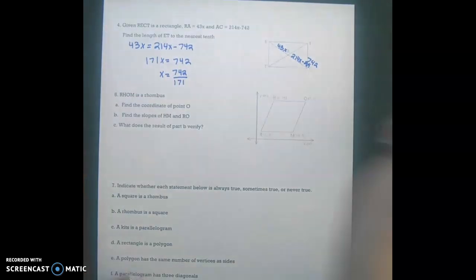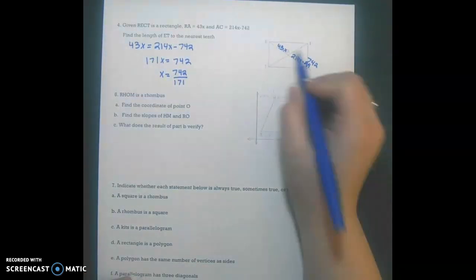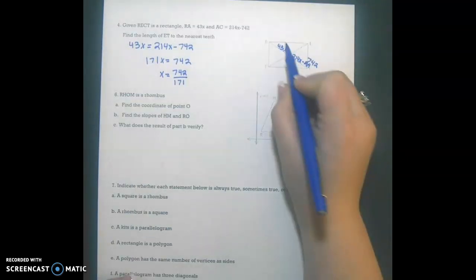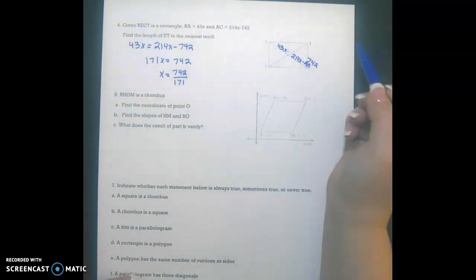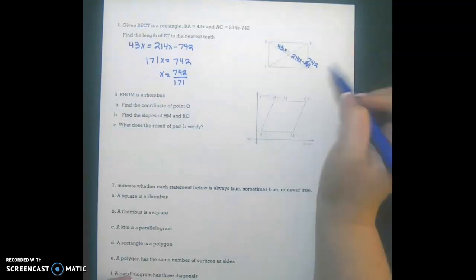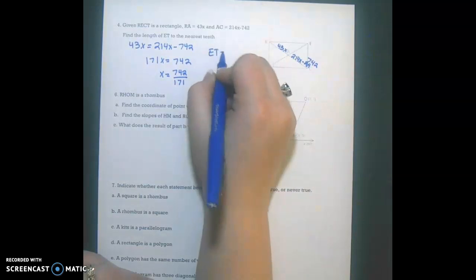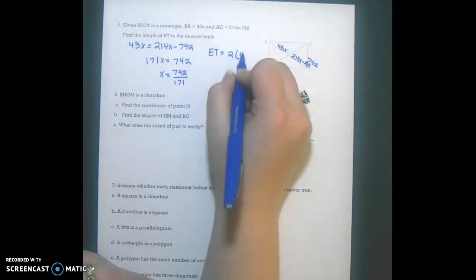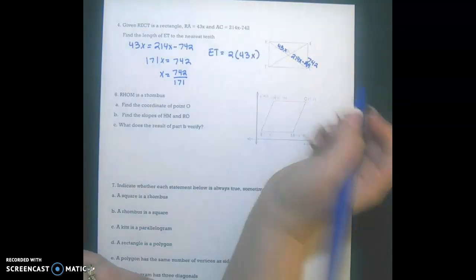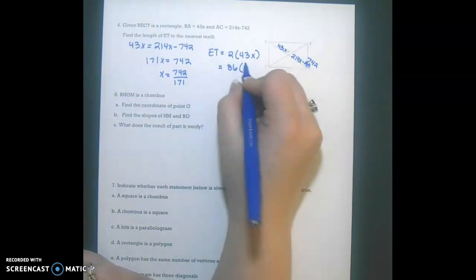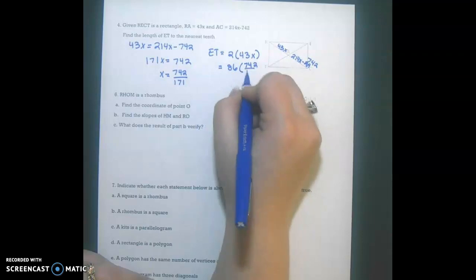So RA is congruent to AC, which means that RC is equal to AC, which means that RC is equal to twice this value. And ET is congruent to RC, so ET is going to be equal to twice 43X. So that's going to be 86 times 742 divided by 171.